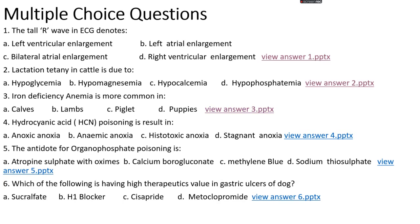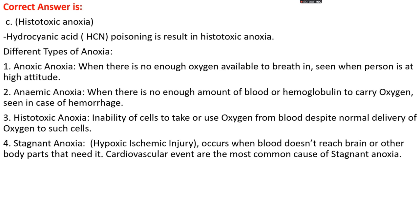Question number 4. Hydrocyanic acid poisoning results in: options A, anoxic anoxia; options B, anemic anoxia; option C, histotoxic anoxia; or options D, stagnant anoxia. The right answer is option C, histotoxic anoxia. Hydrocyanic acid poisoning results in histotoxic anoxia.